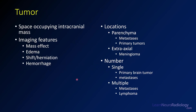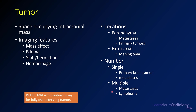Tumors are space-occupying intracranial masses. They have mass effect, deflecting surrounding structures, and may have edema entering the parenchyma. They can cause midline shift or herniation, and can be associated with hemorrhage, particularly higher-grade tumors. Tumors can occur in the brain parenchyma — parenchymal lesions are more likely to be metastases or primary tumors. If they're extraaxial, the most common brain tumor is meningioma. The number of lesions also helps: a single lesion is more likely a primary brain tumor or metastasis, while multiple lesions suggest metastatic disease or lymphoma. MRI with contrast is key to fully characterize tumors, so if you see a suspected tumor on CT, the next step is MRI with contrast.